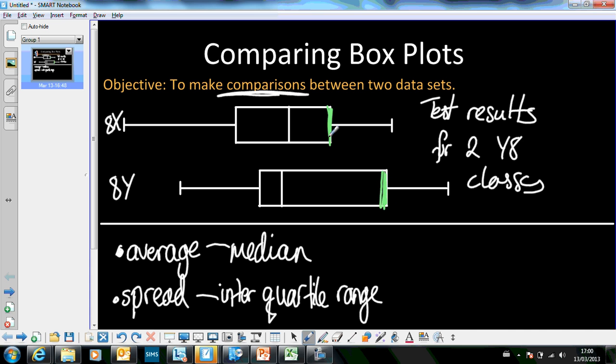And you can see that visually because the upper quartile is there and the lower quartile is there on the top box, on 8X's box. So the interquartile range is just the width of the box. So I'm going to compare these two distributions.